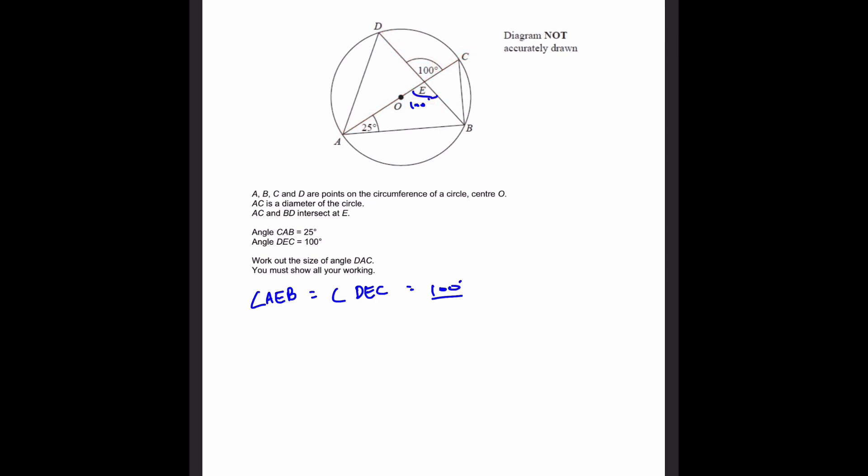Now, we also know that AC is a diameter. So angle ABC is equal to 90 degrees. Why is angle ABC 90 degrees? Because AC is a diameter and this forms a semicircle here. Any angle inside a semicircle is a right angle.